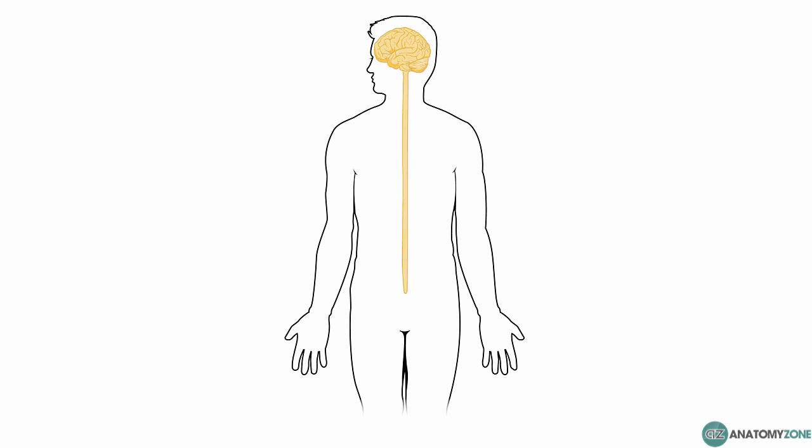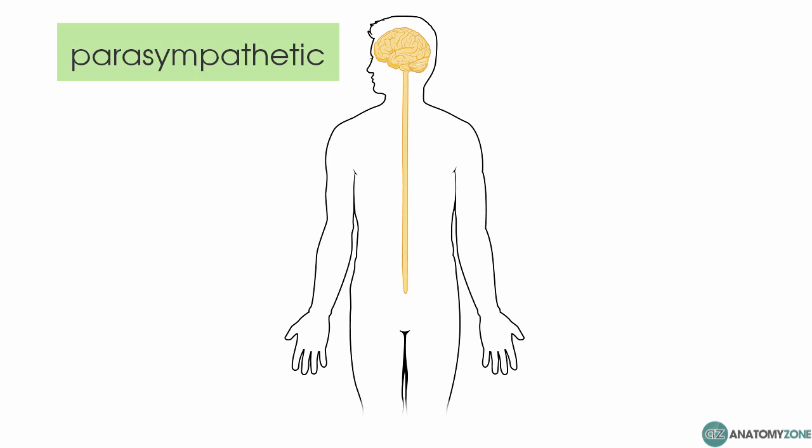The autonomic nervous system consists of two main divisions: the parasympathetic and the sympathetic nervous system. These are functionally and anatomically distinct, and the functions are often antagonistic, which means they often do opposite things to each other.